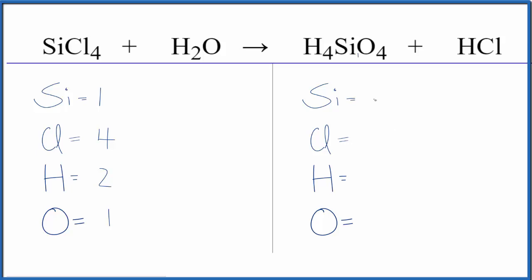Product side, Si, we have one of those, one chlorine, four hydrogens, but be careful because there's a hydrogen here with the hydrochloric acid. That gives us five and then four of these oxygen atoms.